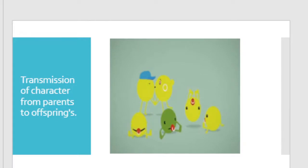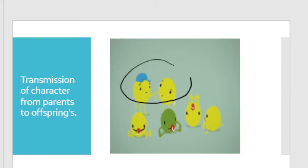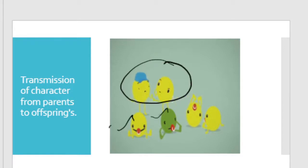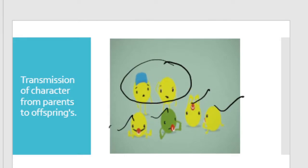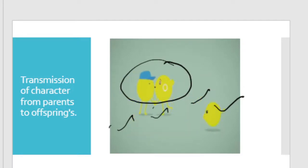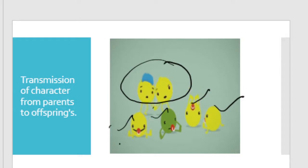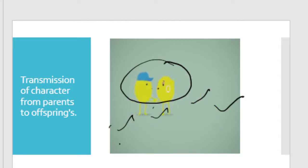Transmission of character from parents to their offspring — these are the parents, and they are the offspring. Offspring means a child. Transmission of character from parents to offspring is known as heredity.